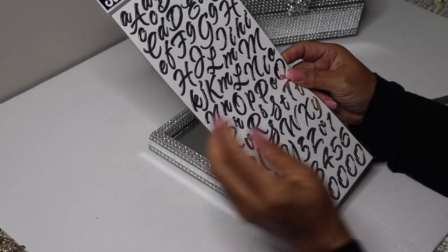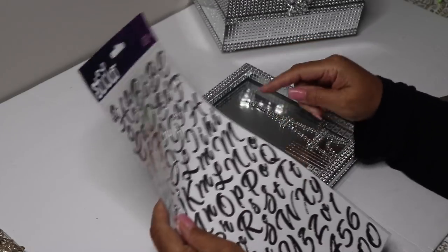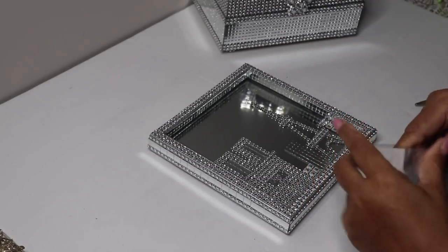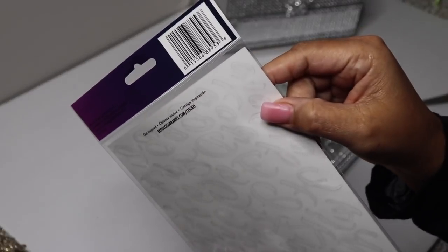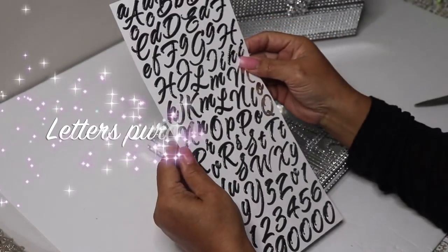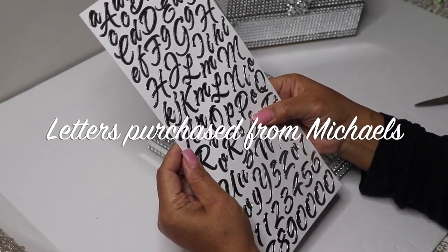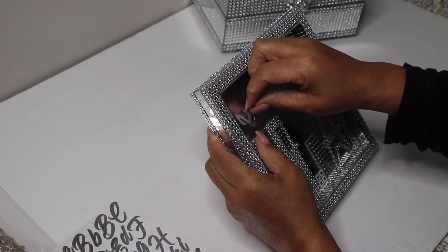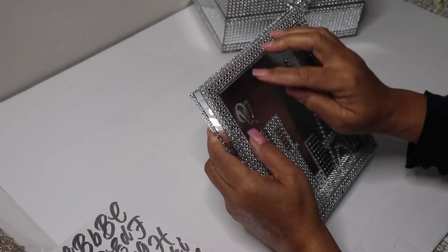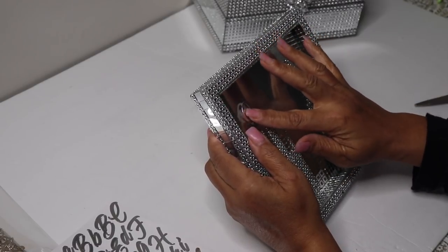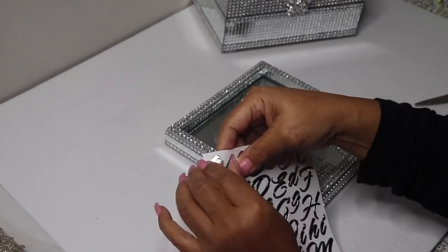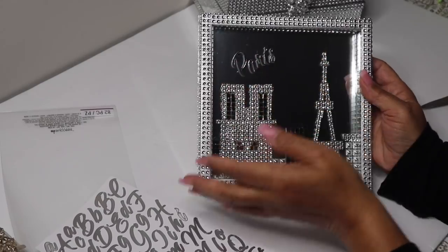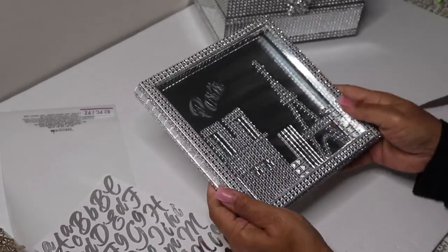I felt like the lid needed something else, so I added the word Paris. I simply peeled the letters off and stuck them onto the glass. I think adding the letters gave it the look that I was looking for.